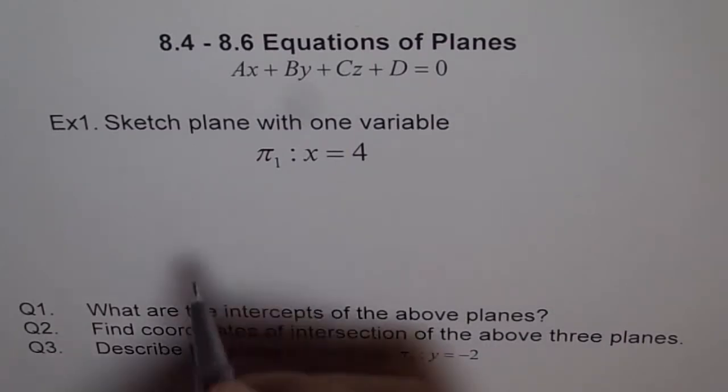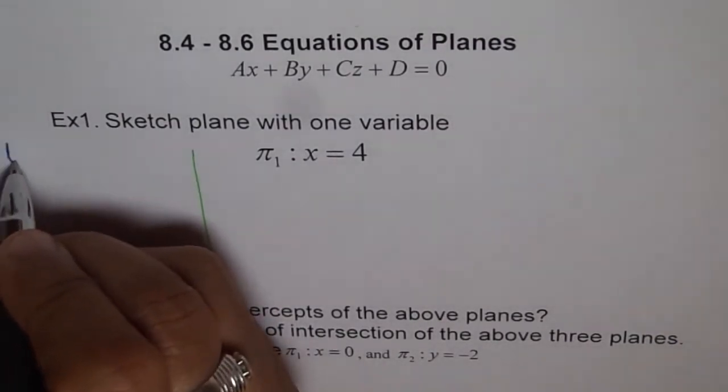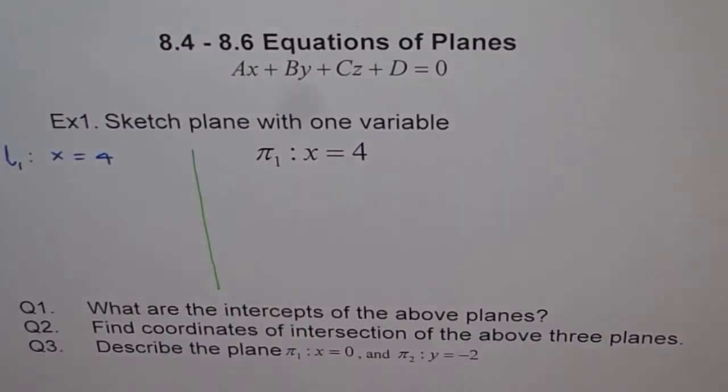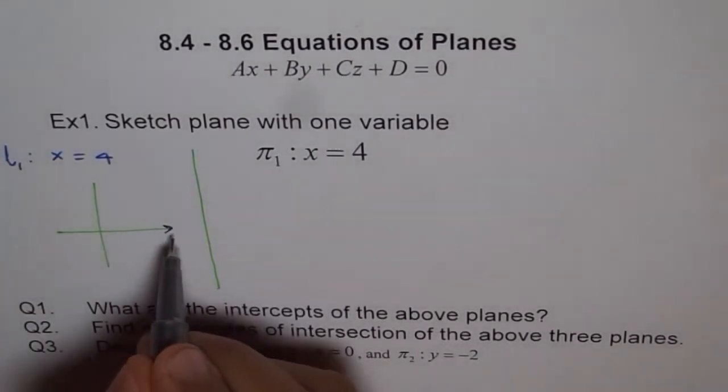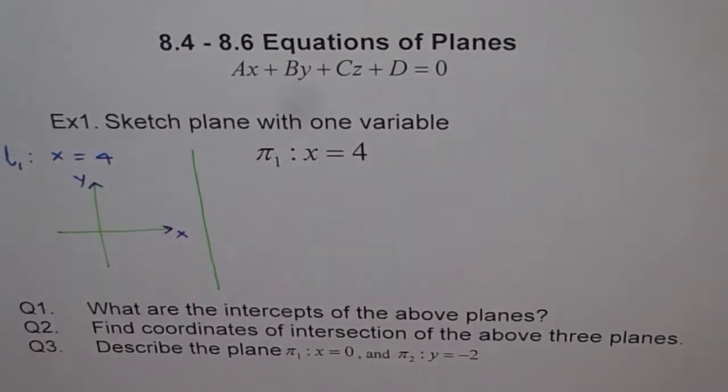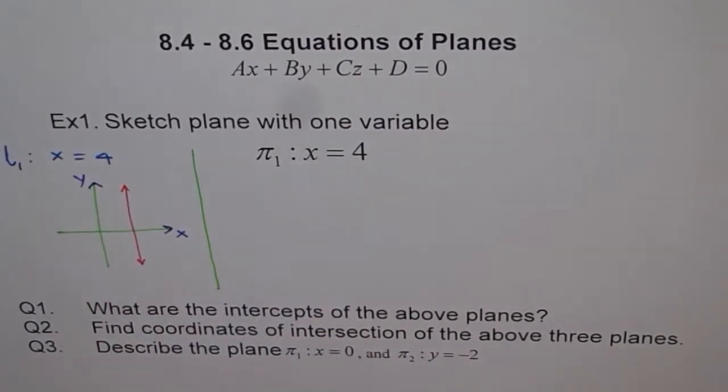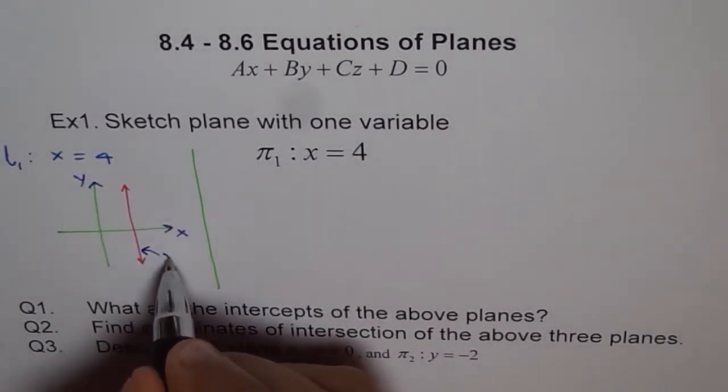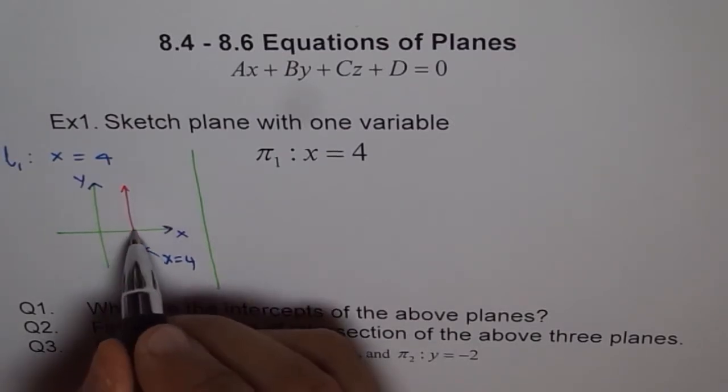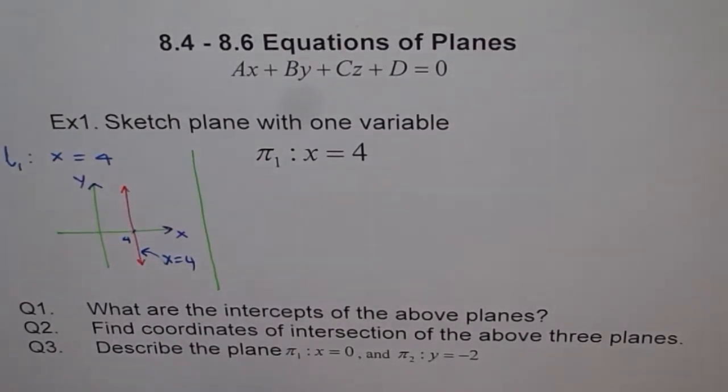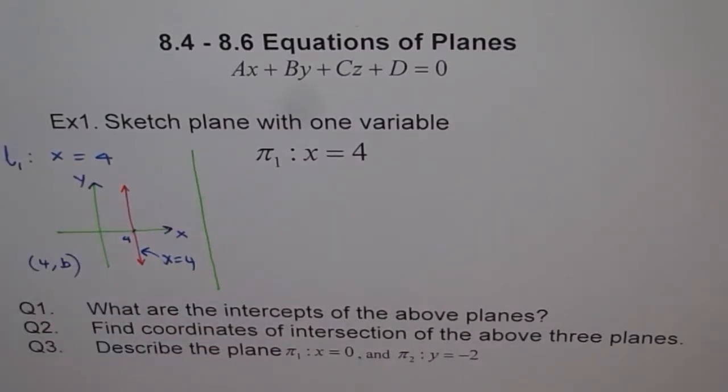Now before getting into the planes, let me review with you x equals four as a line. So let me write this as line L1 as x equals four. This will be good for us to understand both aspects. So if we do x equals four in two dimension where x and y are my coordinate axes, in that case x equals four is a vertical line. That's your line x equals four. Now it has an x intercept. It does not have y intercept. The x intercept is at four.